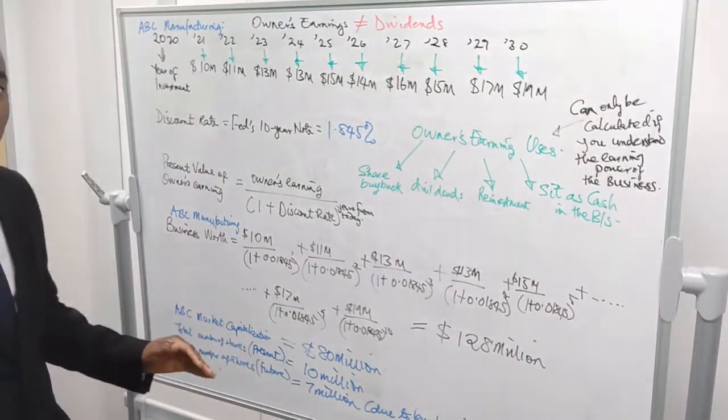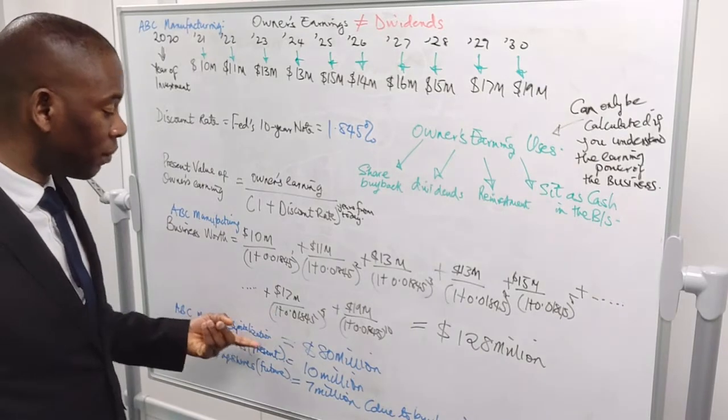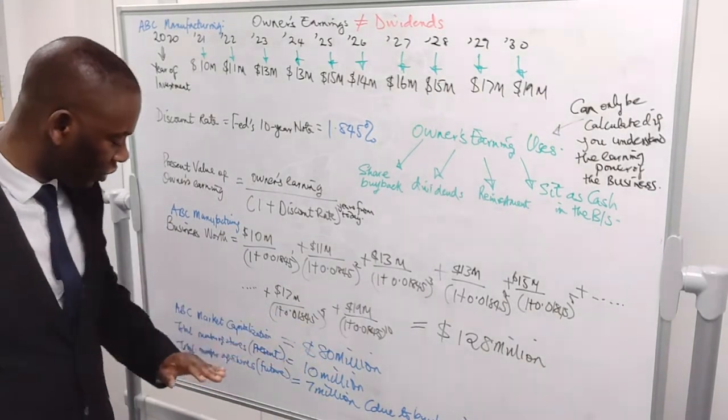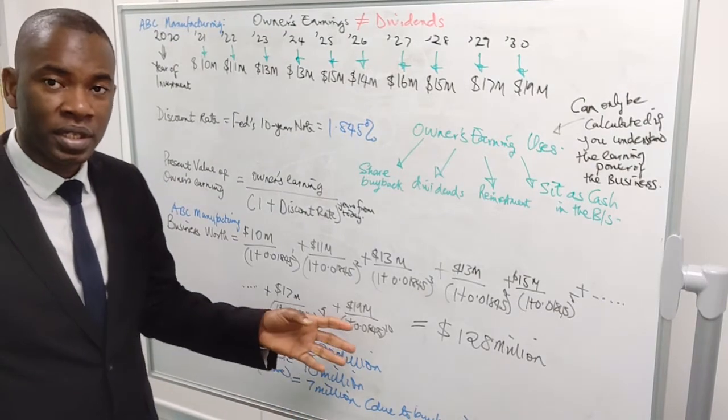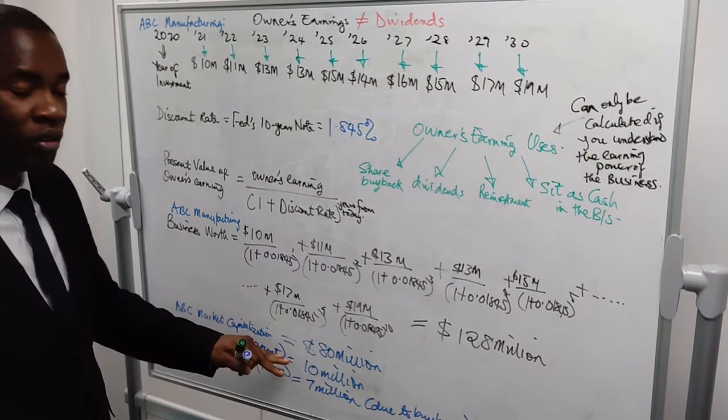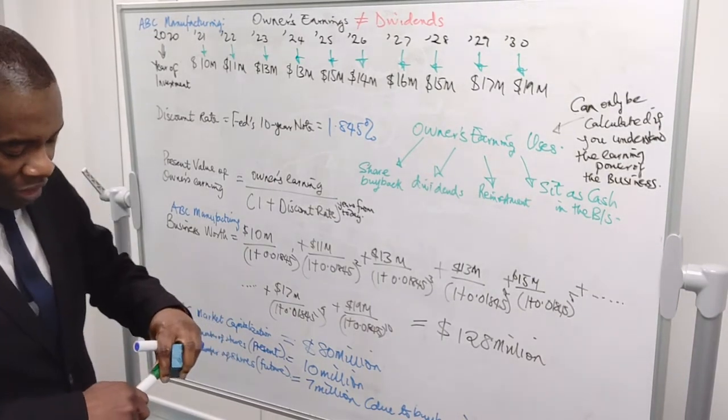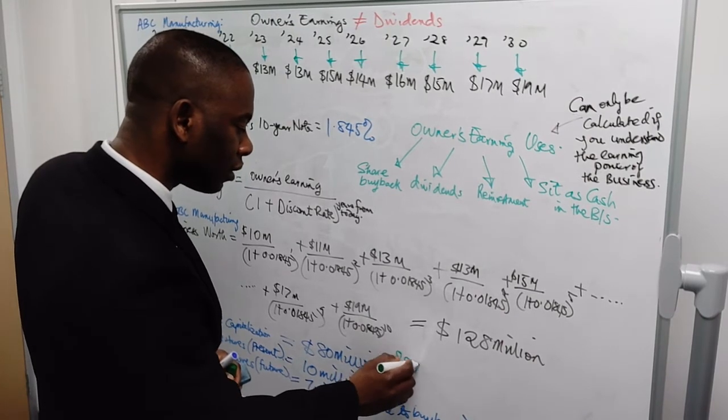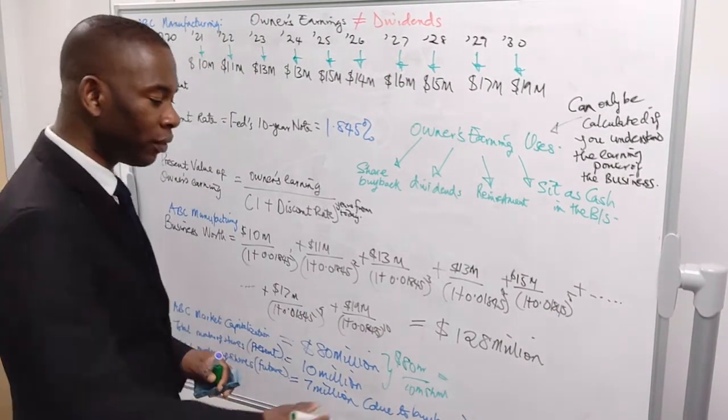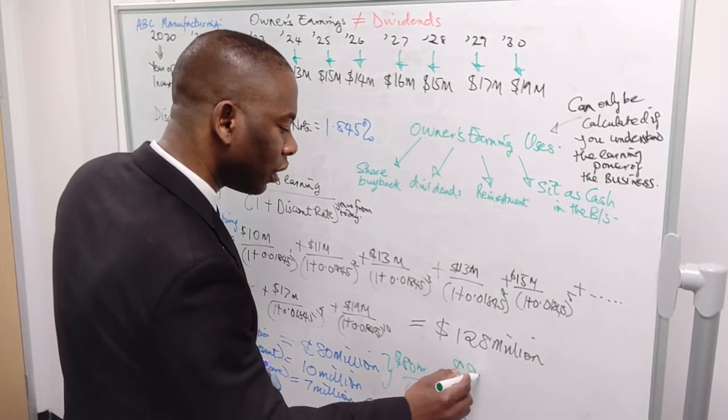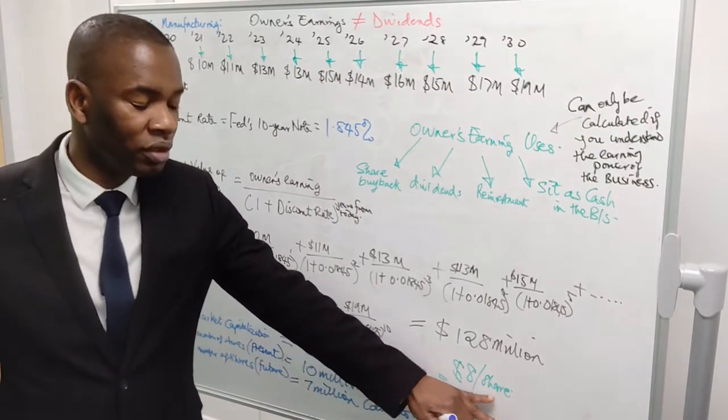We now jump into the market to find out what the Twitter business is currently going for. You then discover that ABC market capitalization is 80 million, actually. And you're like, wow, this is interesting. How many number of shares does it presently have? It has 10 million shares. It means that the unit price of each share will become $80 million divided by 10 million shares, which is going to give you $8 per share. It means the share price currently is $8 per share.